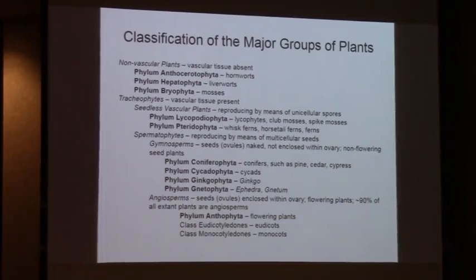I'm not going to define every one of those terms - I'm going to hit the high points basically. This is just an overview of classification of the major groups of plants. The first thing you need to know if you are identifying an unknown plant is which major taxonomic group it belongs to.